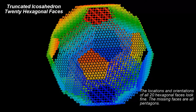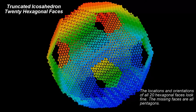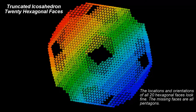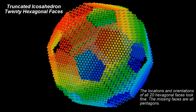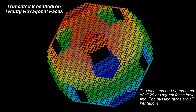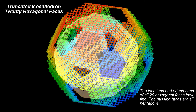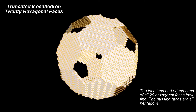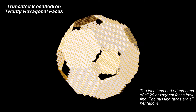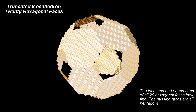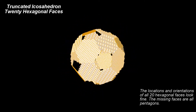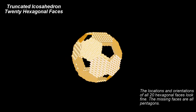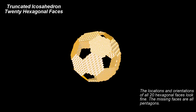Next, let's add the other 12 hexagons corresponding to the other 12 faces of the initial Icosahedron. At this point, the shape of the soccer ball starts to take shape. The locations and orientations of all 20 hexagonal faces look fine.